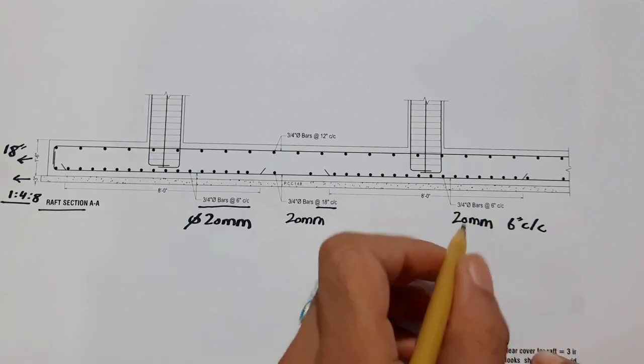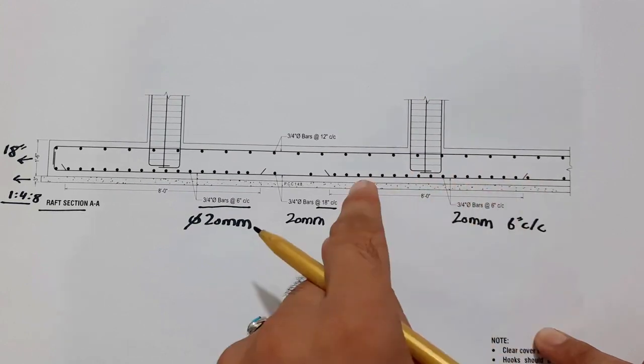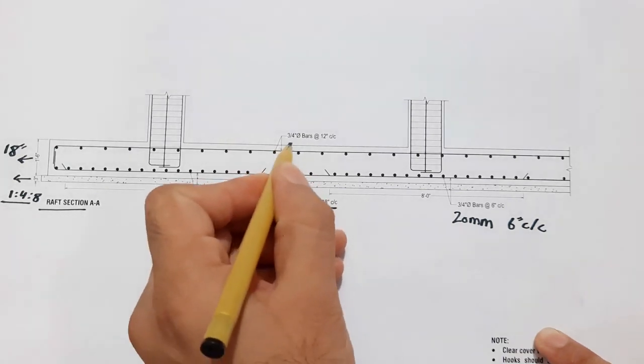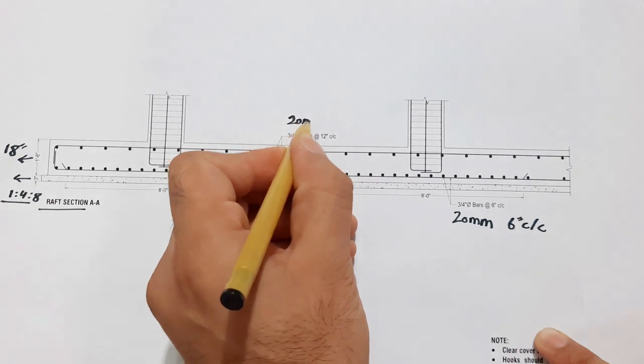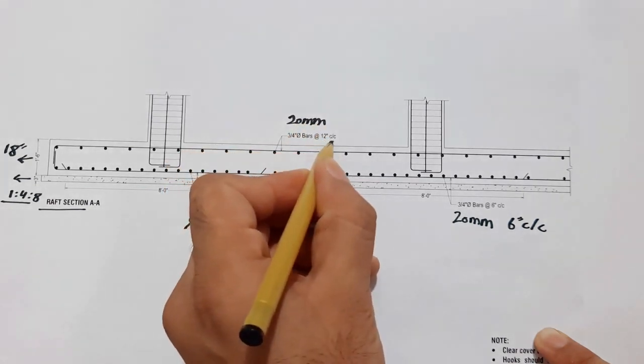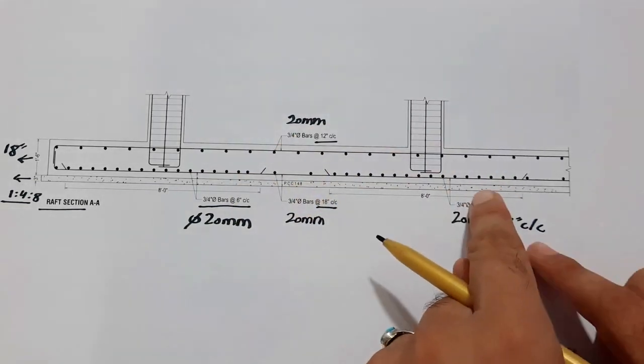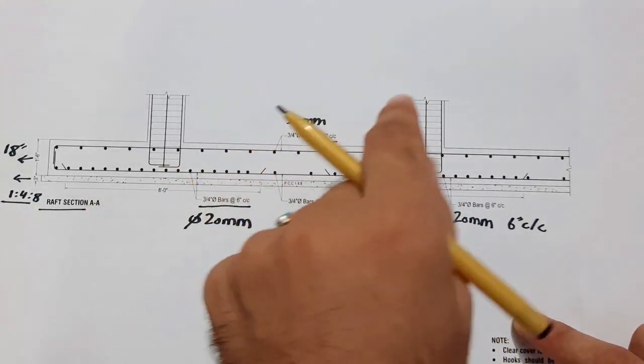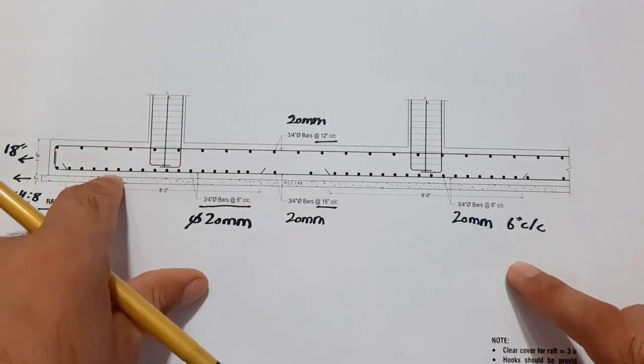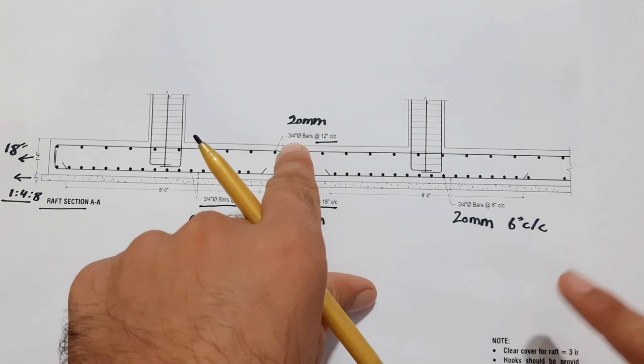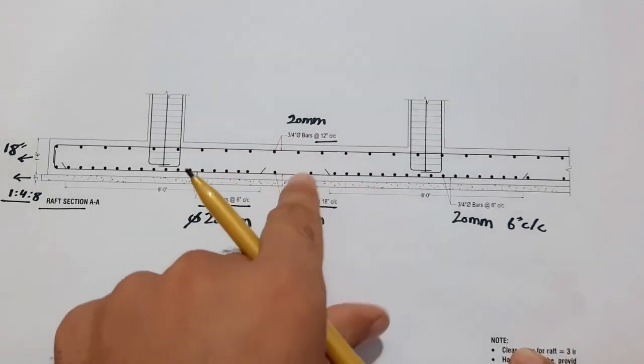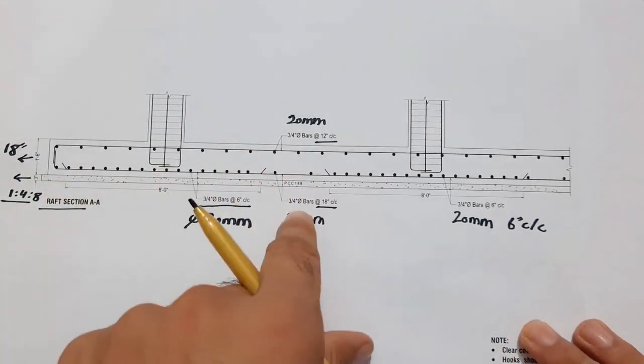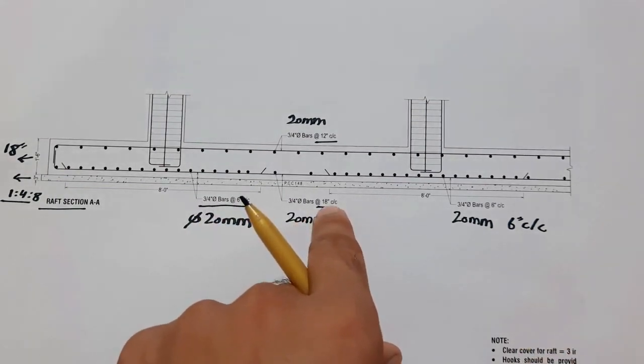Now come to the top bars. You can see the top bars diameter is 3/4 inches, which is again 20 millimeter, with spacing of 12 inches. Therefore the bottom bar spacing should be minimum compared to the top bars because the load comes and the top bars transfer the load to the bottom bars. So the top bar spacing should be maximum compared to the bottom bars, and the mid bars diameter should be same or you can take minimum compared to this diameter, but the spacing should be maximum.